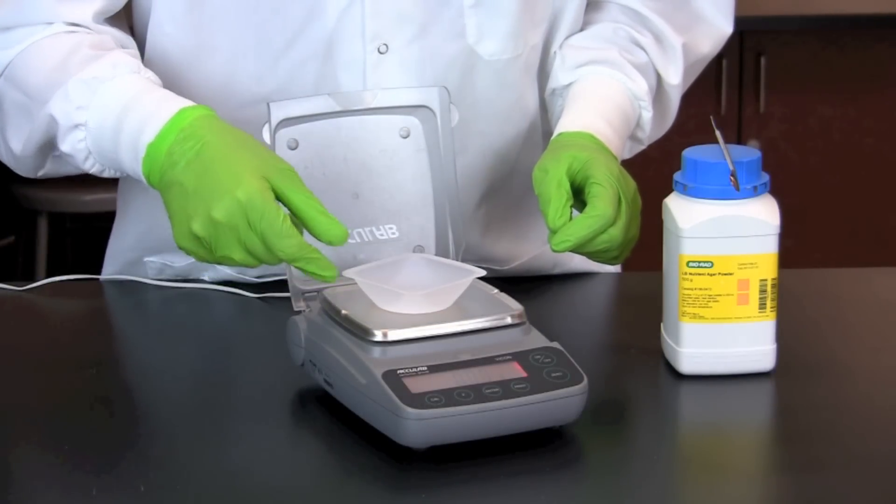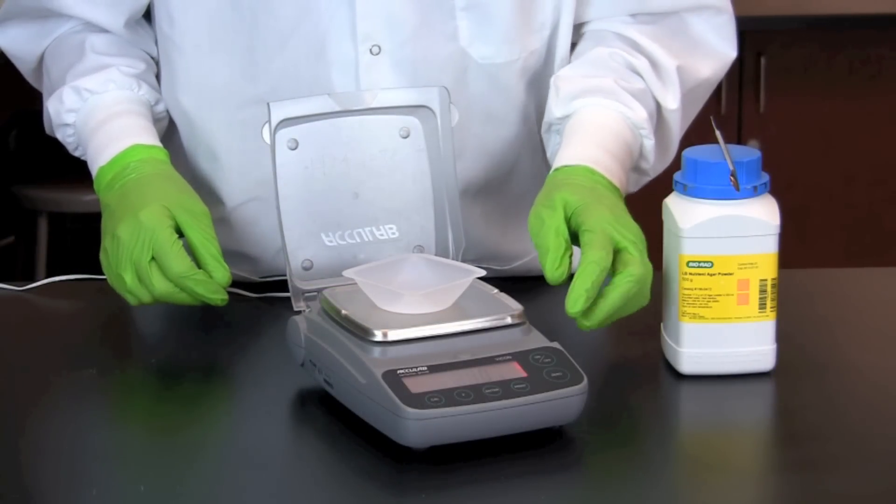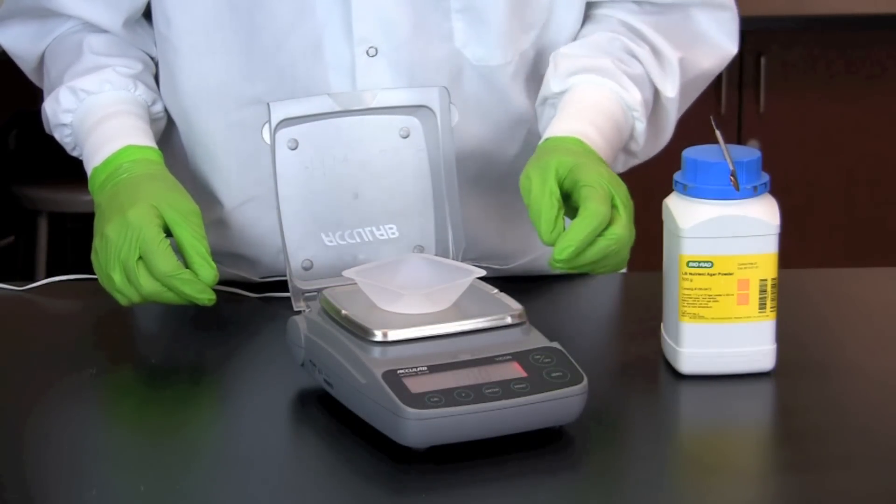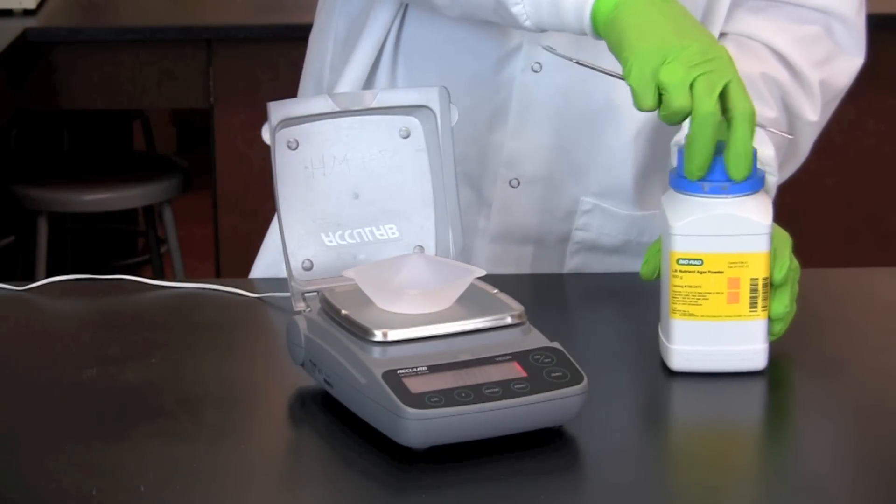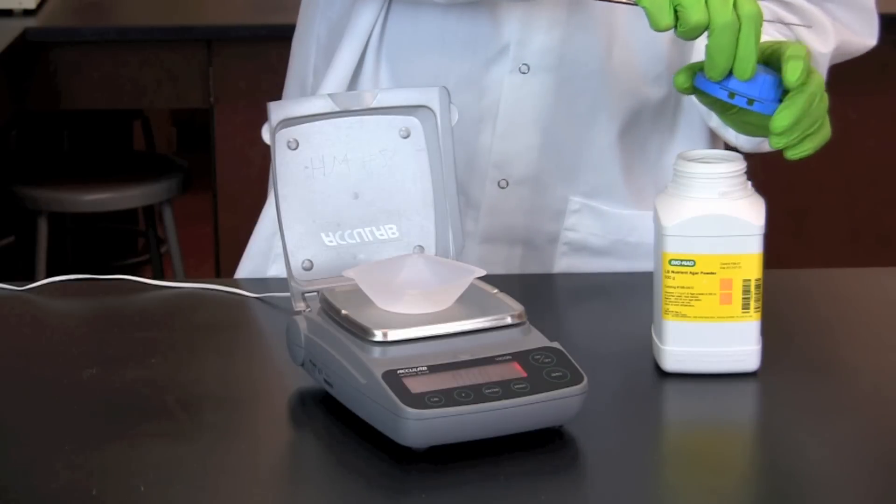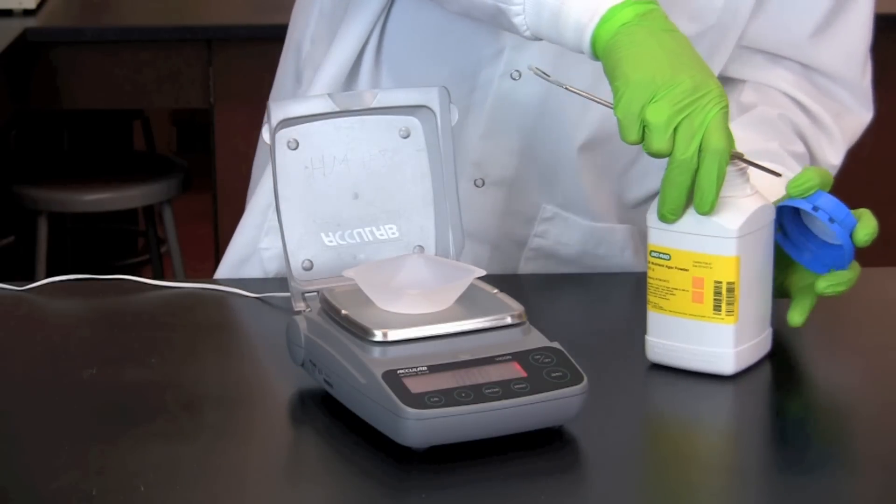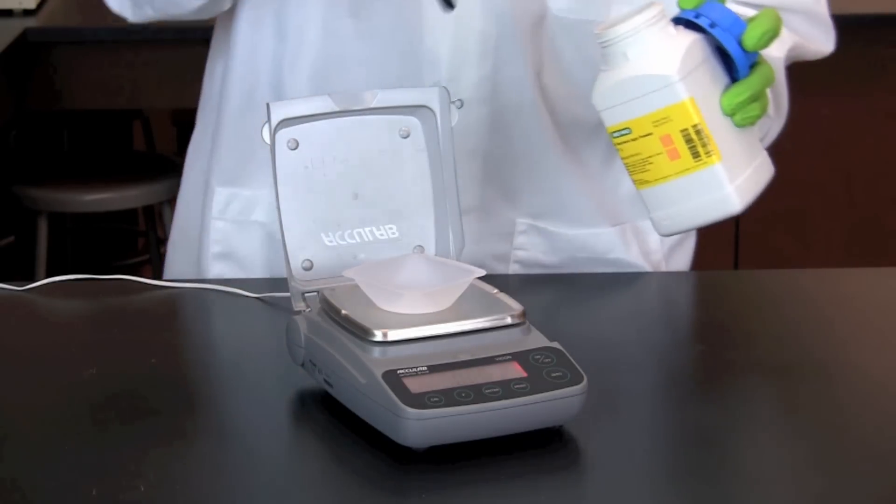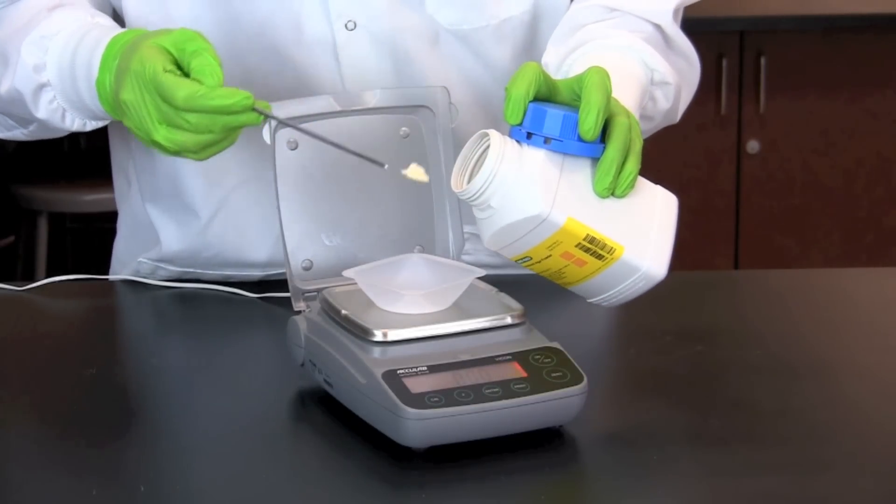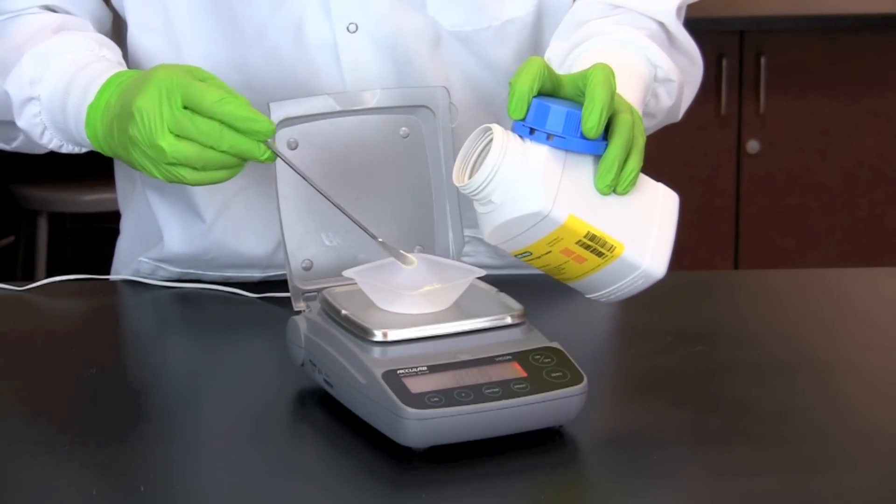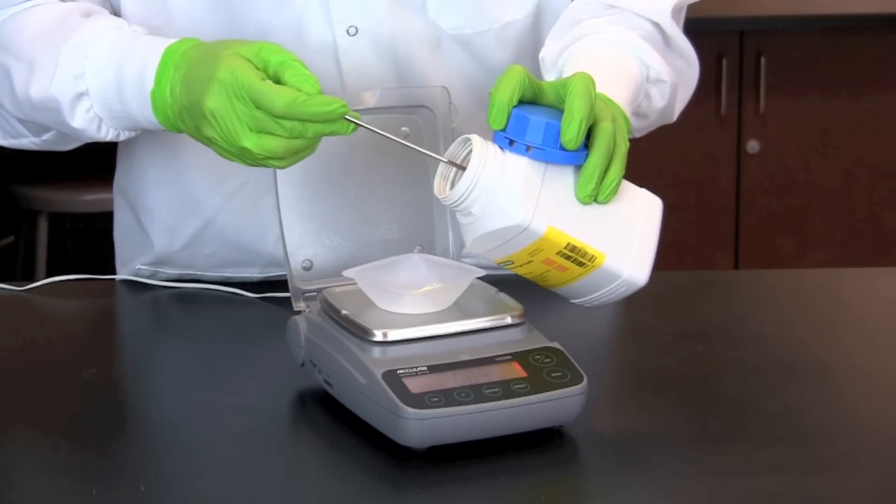Using an electronic balance, we place a weighboat on the weighing platform and zero the balance. We then add LB agar powder slowly using a clean spatula until the proper amount is reached.